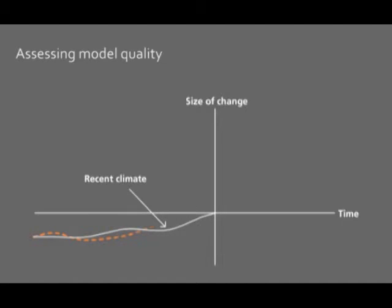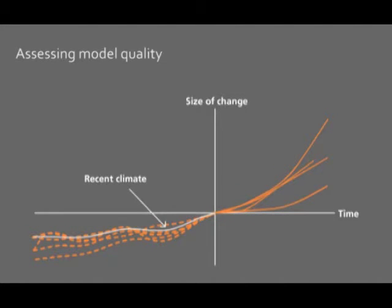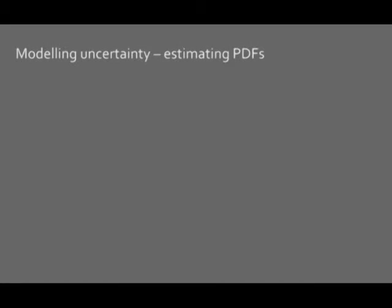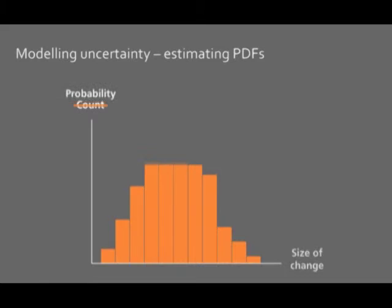So we do this for each of the 300 model runs within UKCP09. It's assumed that models which are better at representing past climate will be better at representing future climate. The importance given to each model version is altered based on how well they represent current climate and recent trends.